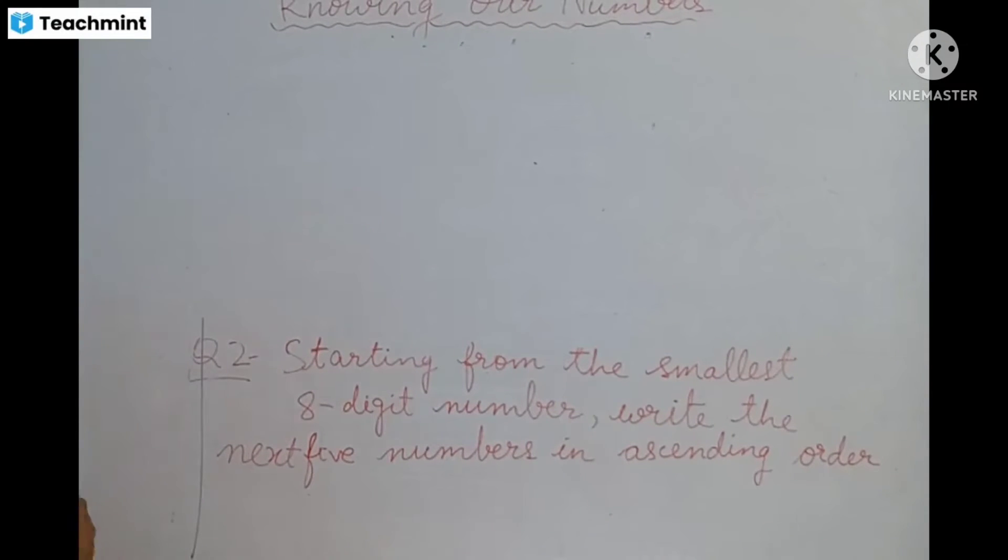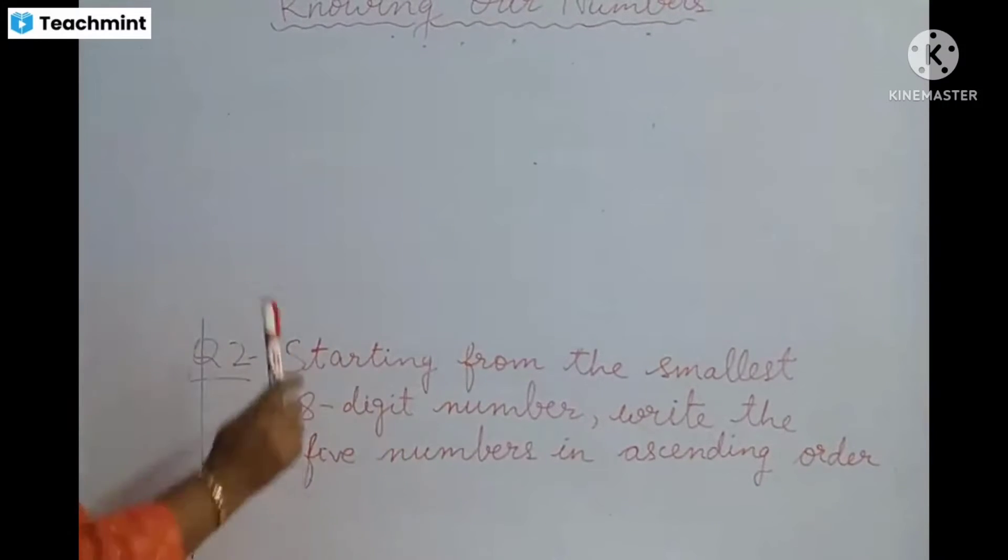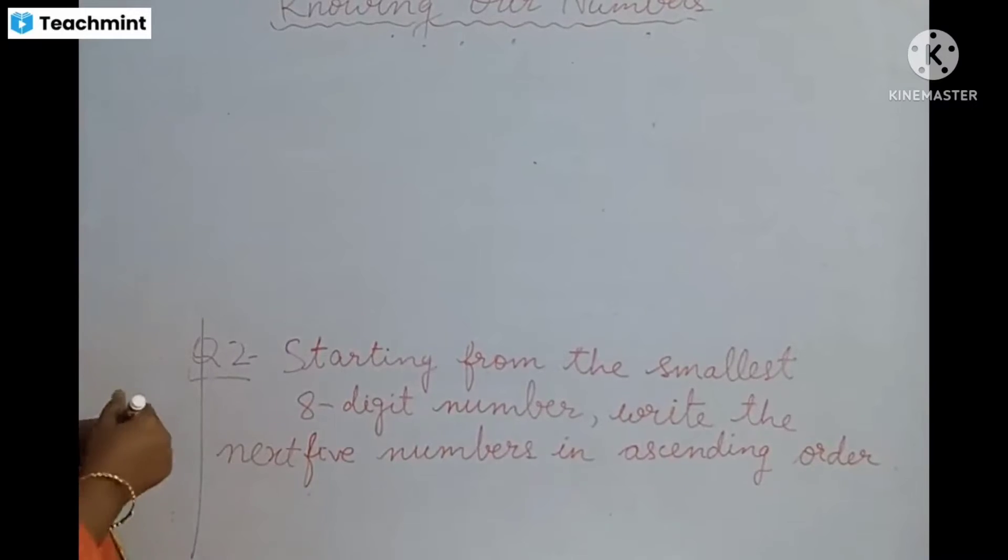What is the first part of the question? Starting from the smallest 8 digit number. The smallest 8 digit number, you have to start with the smallest 8 digit number. What is the smallest 8 digit number?